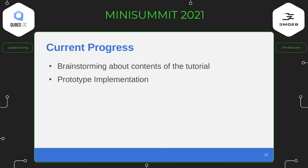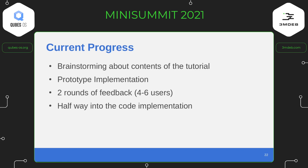I implemented the prototype in Figma and did two rounds of feedback with four to six users each. All participants were able to complete the tutorial without any help, though there were still things to polish. I implemented the feedback into the next version, and what you saw was the final version after those two rounds. I am now halfway through the code implementation.